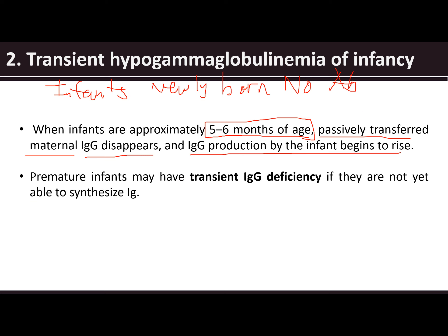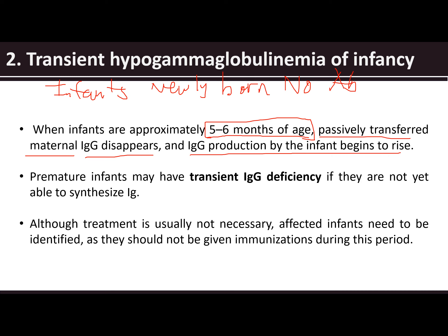Premature infants may have transient IgG deficiency if they are not yet able to synthesize immunoglobulins. Although treatment is usually not necessary, affected infants need to be identified as they should not be given immunizations during this period, since they are unable to synthesize immunoglobulins.